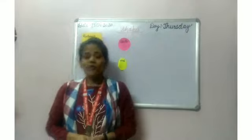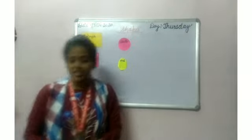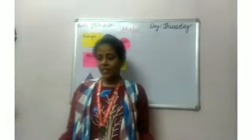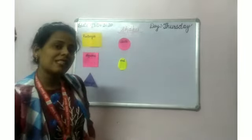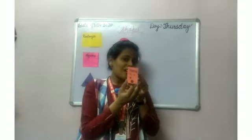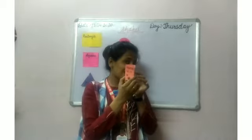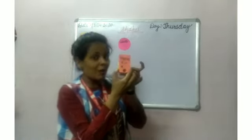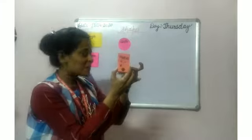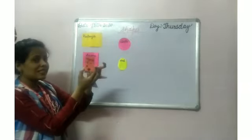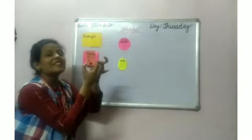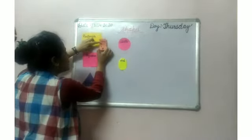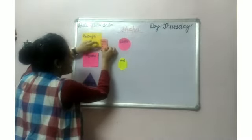Now we will match these shapes with their pictures. Can you tell me what is this? This is our maths book. What is the shape of the maths book? Rectangle. Yes, this is rectangle.